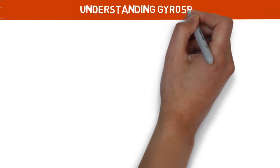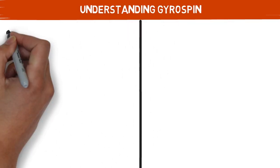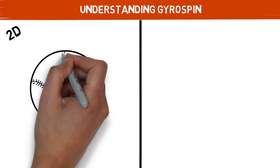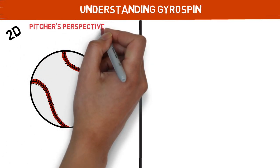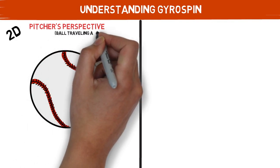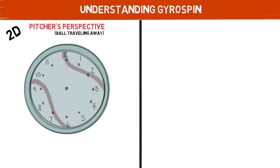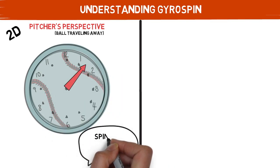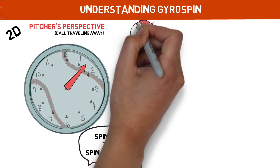Before we dive into the topic of today's video, we first need to recap what exactly gyro spin is. Most of the time, when you hear talk about pitch design, people are only speaking in two-dimensional terms. To oversimplify things, when a ball is traveling away in this scenario, we look at the axis the ball is spinning around, and use terms to describe it such as spin axis, tilt, or spin direction.